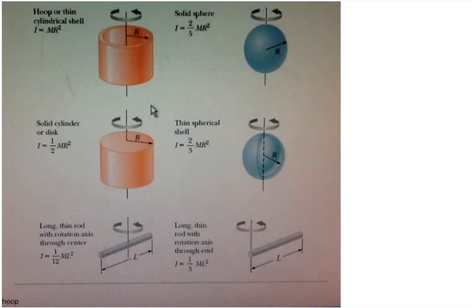Number 16 says each of the following objects has a radius of 0.184 meters and a mass of 2.5 kilograms, and each rotates about an axis through its center as in the table below with an angular speed of 35.9 radians per second. Find the magnitude of the angular momentum of each object.